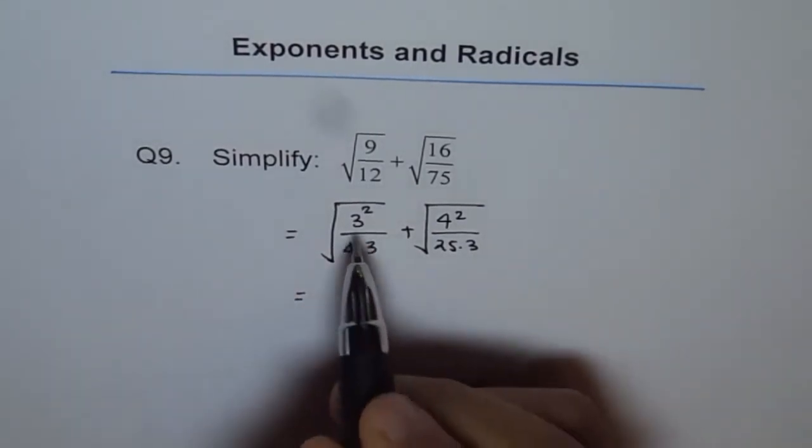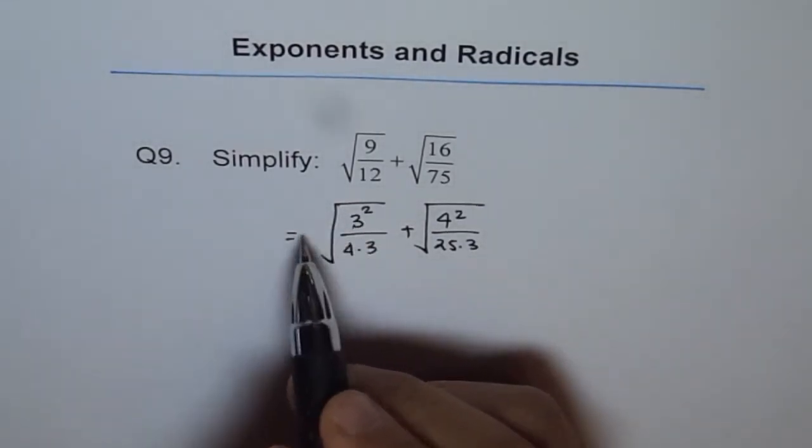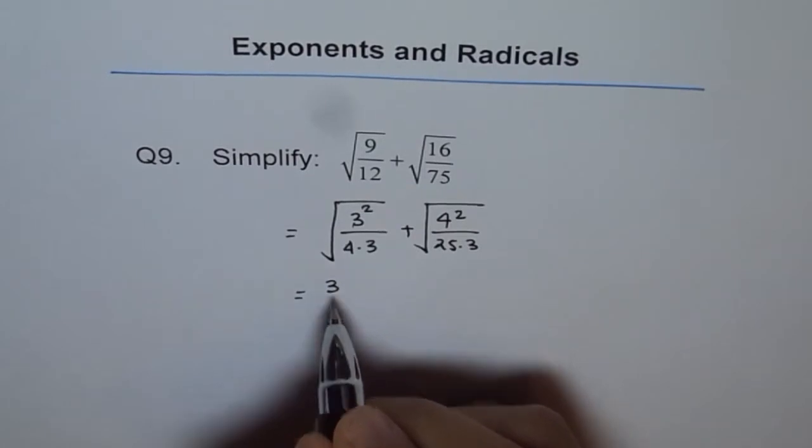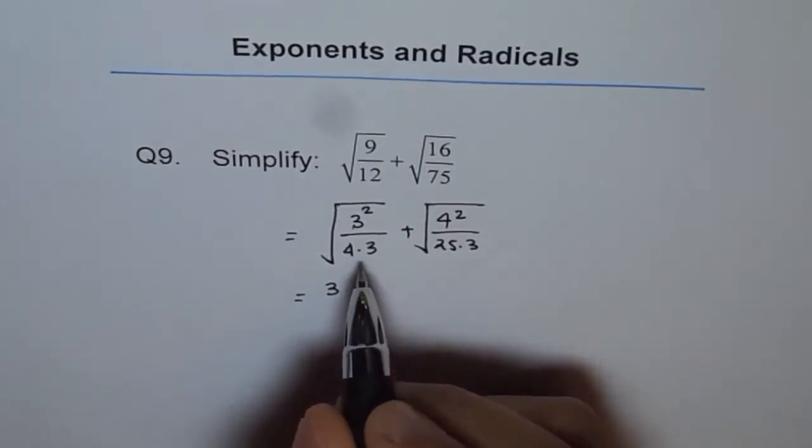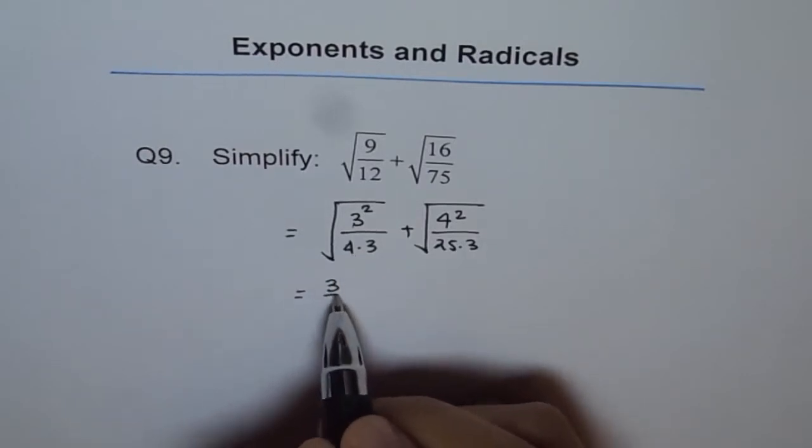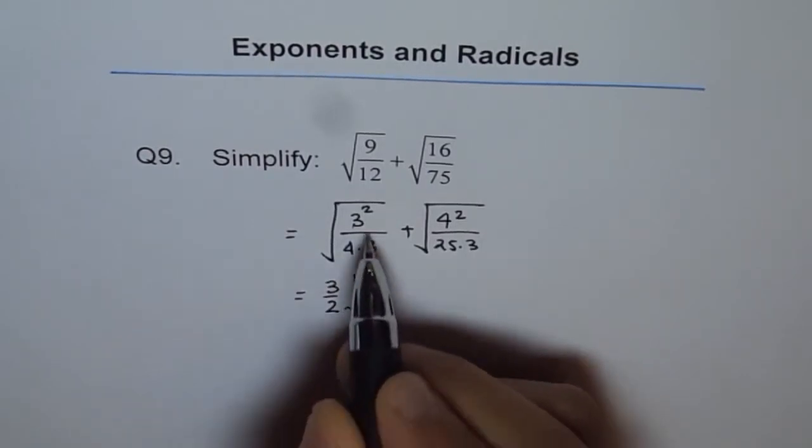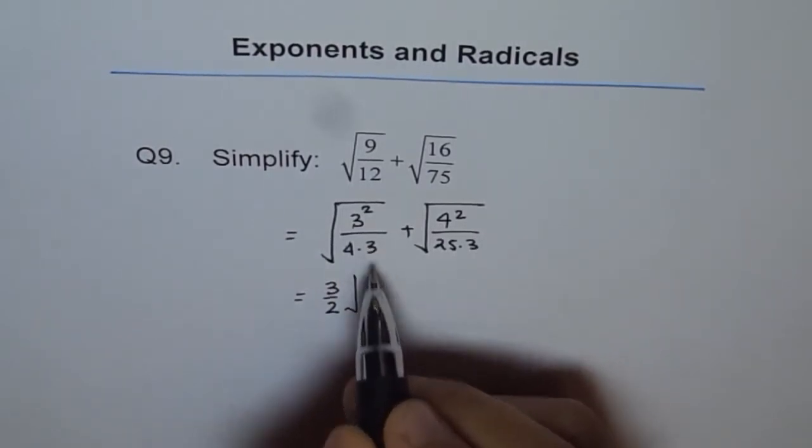Now, since we have 3 squared under the square root, we can take out 3 outside. So it becomes 3 here. And the denominator has got 4. 4 is a square of 2, so it can bring 2 outside. So I am left with 1 here and 3 here.